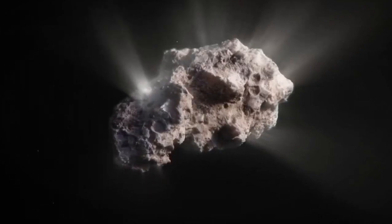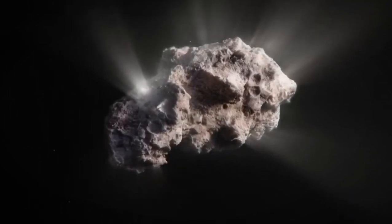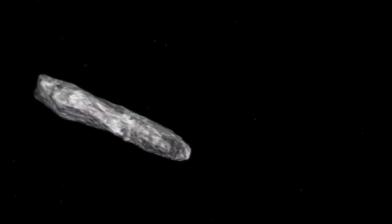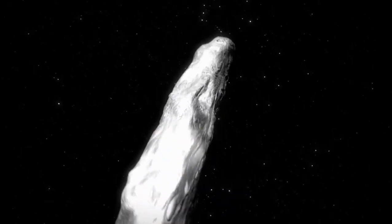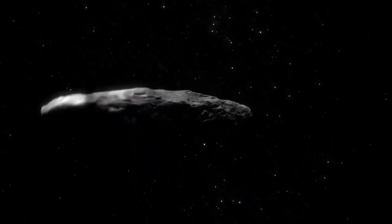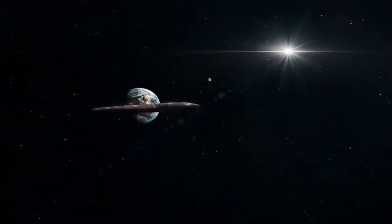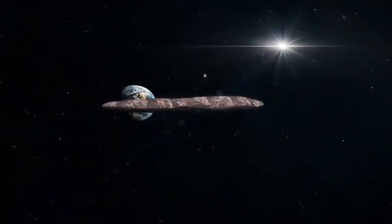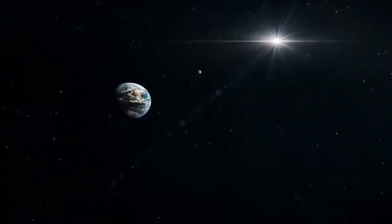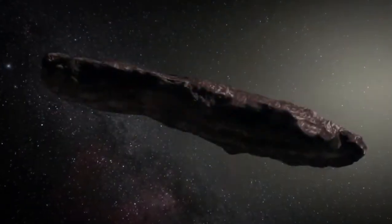The exact stellar system of Oumuamua's origin remains a mystery. However, in 2018, researchers traced Oumuamua's trajectory back to its original route towards the Sun, discovering that one million years ago, it passed close to four stars, with the red dwarf star HIP 3757 being its closest encounter. It's plausible that Oumuamua originated from there or had been adrift in space for an extended period. Unlike solar system bodies that follow tight orbits around the Sun, Oumuamua's trajectory was hyperbolic, indicating that its high-speed approach to the Sun minimally influenced its path due to gravitational bending.